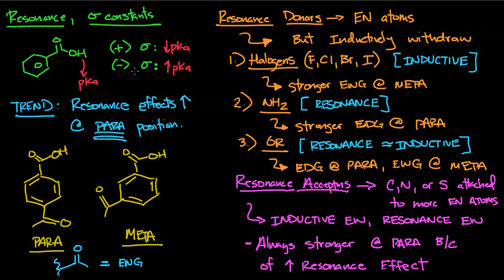When it comes to resonance, the trend is that resonance effects increase at the para position. If you draw the electrons and how they move, it's clear why the effect is so significant at the para position compared to the meta. Starting on the left and pushing electrons, you'll notice a positive charge is generated on the carbon directly attached to the COOH group. The electrons move directly across the aromatic ring from one side to the other.